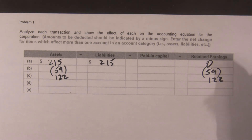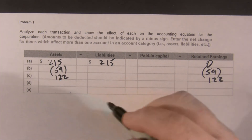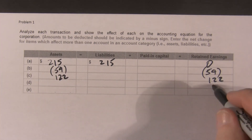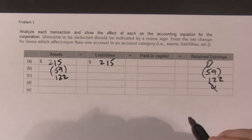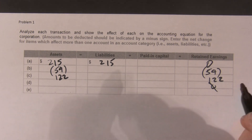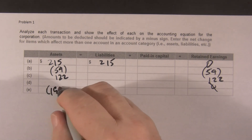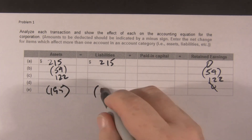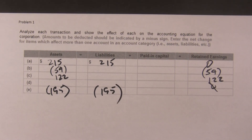The next one is we collected cash from customers — one asset goes up, the other asset goes down, same amount, no effect on retained earnings. And then we paid suppliers, so our assets go down $195,000, our liabilities go down $195,000 — no net change to retained earnings.